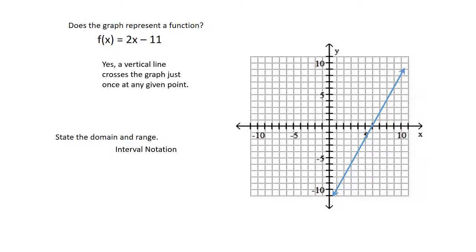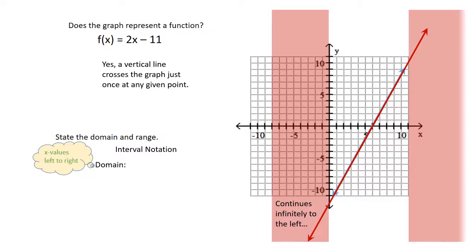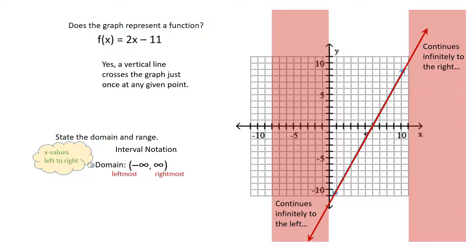For the domain and the range, we're going to use interval notation. Remember, for domain we're thinking x values and left to right. Looking at the left of this graph, with that arrow it will continue infinitely to the left. And looking at the right of the graph with an arrow, it will continue infinitely to the right. So in interval notation, we're going to use negative infinity for our leftmost value and positive infinity for our rightmost value.